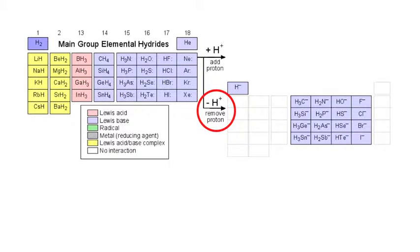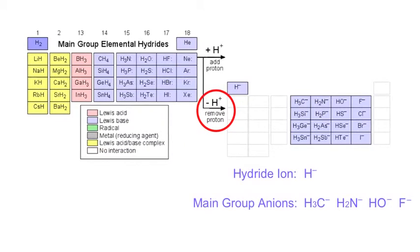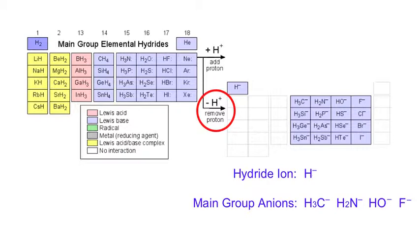Removing H+ from our set of main group elemental hydrides — note that not all species react. Hydrogen H2 gives the hydride ion. There is a large block of species on the right-hand side of the periodic table: methane gives the carbanion, water gives the hydroxide ion, hydrogen chloride gives the chloride ion. This generates the hydride ion and the main group anions such as methyl anion, nitride ion, hydroxide, and fluoride.